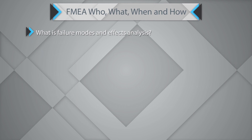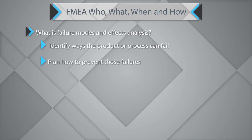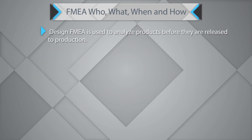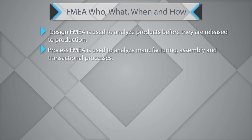What is Failure Mode and Effect Analysis? It will help you identify ways the product or process can fail and help you plan to prevent those failures. There are three different kinds of FMEAs. The first is System FMEA, used to analyze systems and subsystems in the early concept and design stages — it focuses on potential failure modes associated with functions of a system caused by design. The second is Design FMEA, used to analyze products before they are released to production. And finally, the most popular is Process FMEA, used to analyze manufacturing, assembly, or transactional processes. In a typical BPO environment, the process FMEA is the most useful.